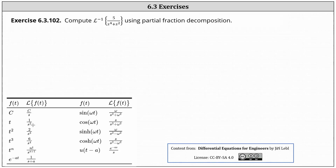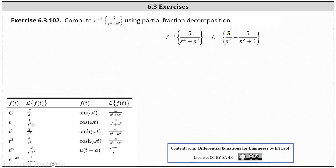Performing partial fraction decomposition on five divided by the quantity s to the fourth plus s squared gives us five divided by s squared minus five divided by the quantity s squared plus one. Therefore we can write the given inverse Laplace transform as the inverse Laplace transform of five divided by s squared minus five divided by the quantity s squared plus one.